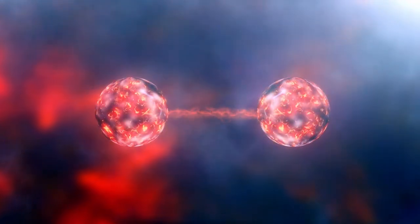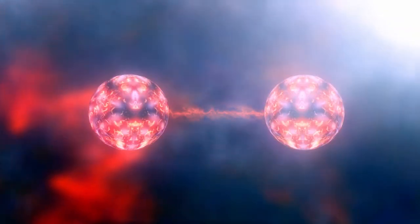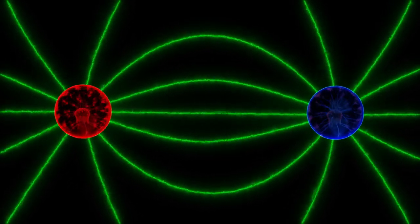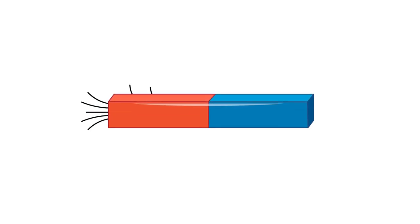These aligned areas are called magnetic domains. When enough of these domains line up in the same direction, the material itself becomes a magnet, with a north and south pole. The poles are where the magnetic field is strongest.